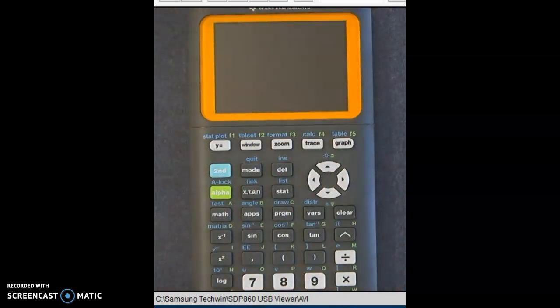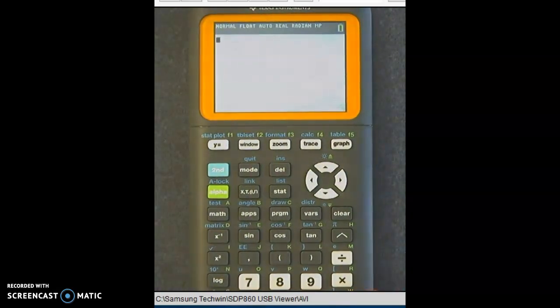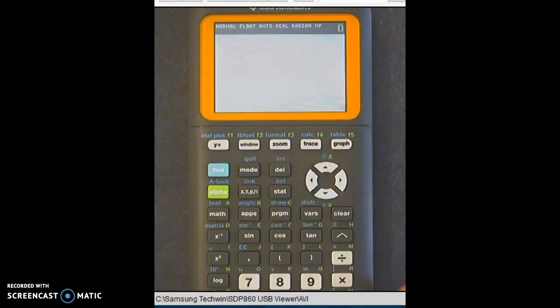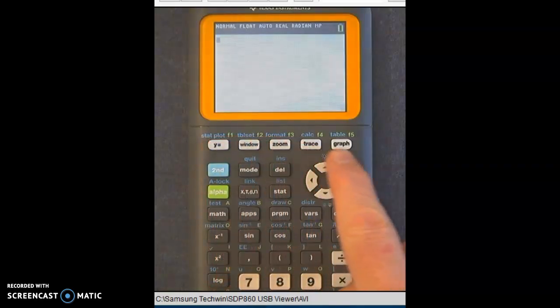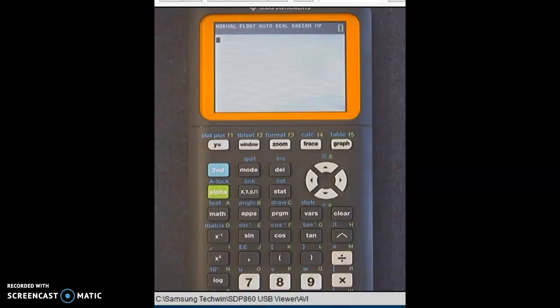So when you start yours up, when you turn it on, you might get a screen that looks like this. It's blank, or it might have some math in it. We're going to use these top row buttons for our tables. These are the same top row buttons we used for when we graphed.